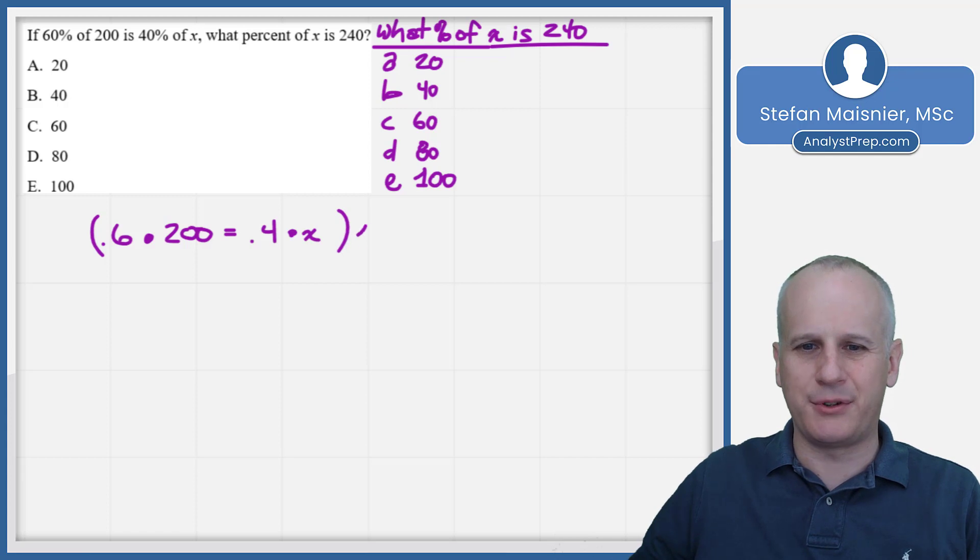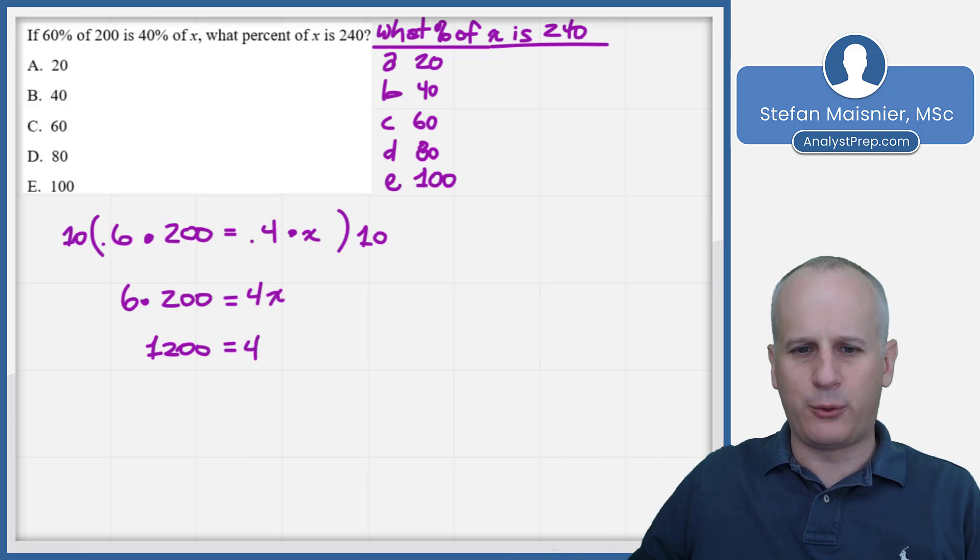So we'll start from the beginning taking notes as we go. 60% becomes 0.6 because 60, shift the decimal over two places, 0.6. 'Of' means times 200, 'is' means equals, 40%, so 0.4, 'of' means multiply, and x is x. So we've got to solve for x first, and the best way to begin that process is to get rid of the decimal. So I'm going to multiply both sides by 10 to get to where we've now got 6 times 200 is equal to 4x.